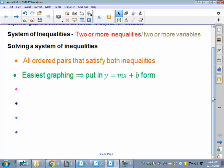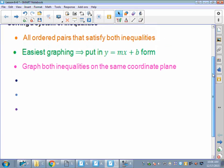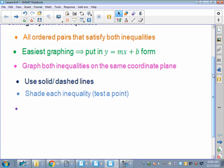The easiest way to graph is to put it in mx plus b form. Easy to find the y-intercept, the slope, and then sketch that graph. So when I give you a system, I'm going to give you two inequalities, and you're going to graph them both on the same coordinate plane. It could get messy because remember, for inequalities, we do shading.